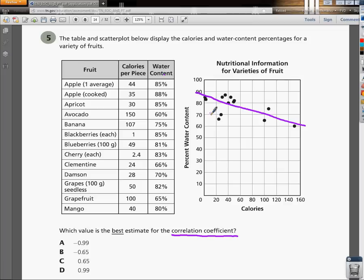So we go look at our answer choices, and we've got a negative 0.99, a negative 0.65, a 0.65, and a 0.99.